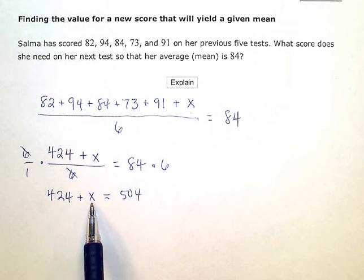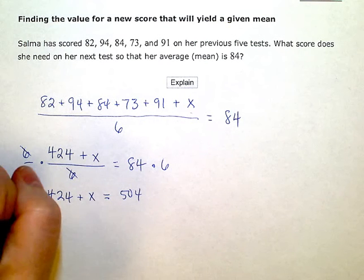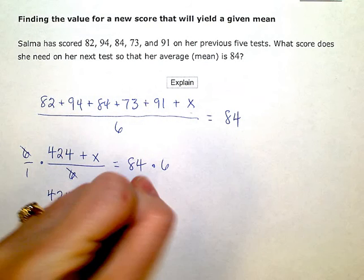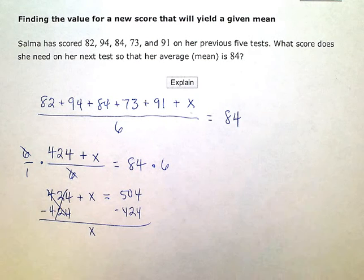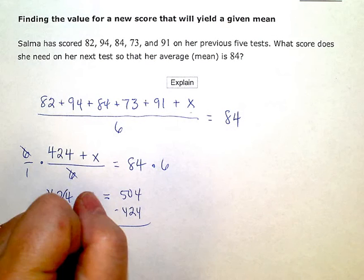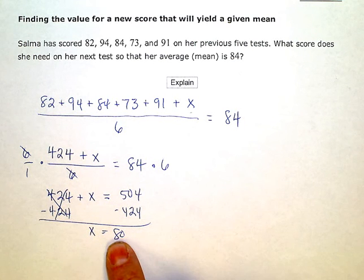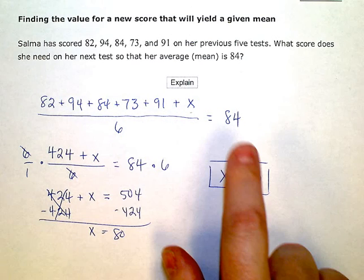Now I'm still trying to get the X by itself, so I need to get rid of this plus 424 that's being added here. So the inverse to that is subtract 424. Okay, so that'll leave me with just X on the left. And 504 minus 424 on the right, that leaves me 80. So this last test, the missing one, she would have to score at least 80 to keep her average at 84.